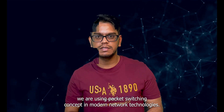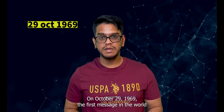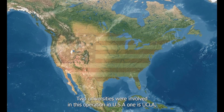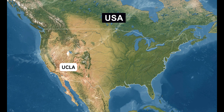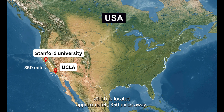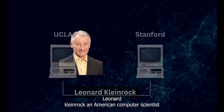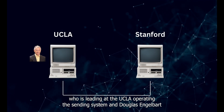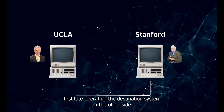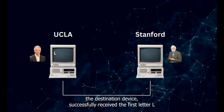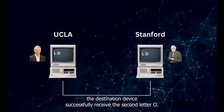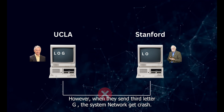On October 29, 1969, the first message in the world was sent through ARPANET — the word 'LOGIN.' Two universities were involved: UCLA, University of California, and Stanford University, located approximately 350 miles away. The first letter 'L' was successfully received, and then the second letter 'O' was also received. However, when they sent the third letter 'G,' the system crashed. This event became a significant milestone in the development of networks.